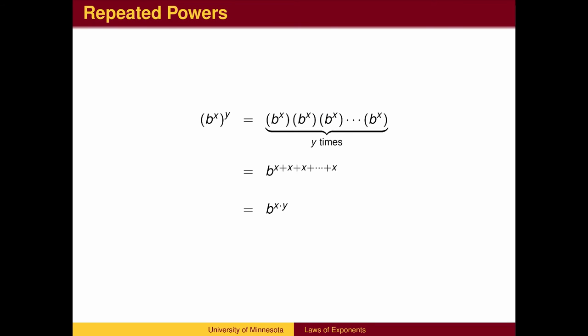When we put an exponent on an expression with an exponent, we are repeatedly multiplying the expression inside the parentheses by itself. b to the x to the y is y copies of b to the x, which means we need to add y copies of x, which is multiplying x and y.